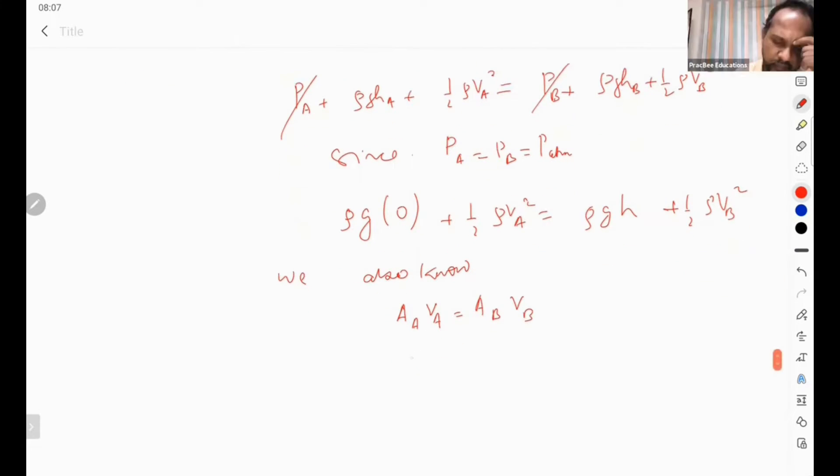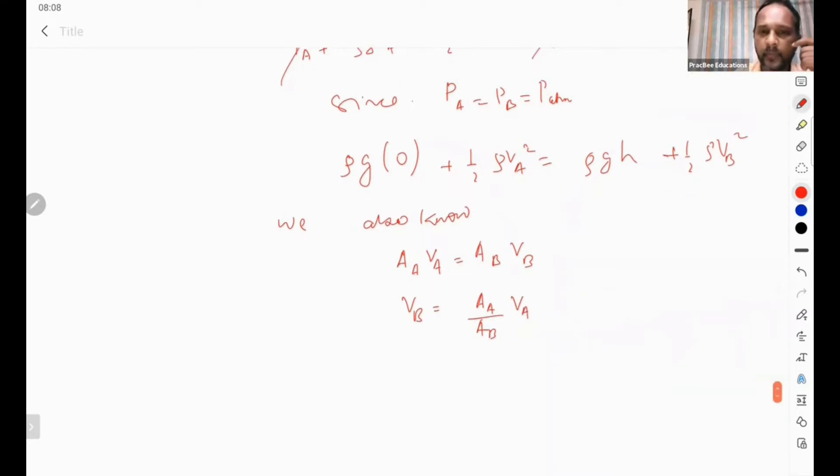So I can write velocity at b as (A_a/A_b) × v_a. Okay.